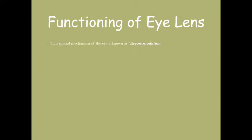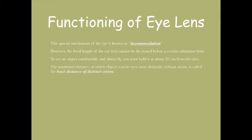However, the focal length of the eye lens cannot be decreased below a certain limit. To see an object comfortably and distinctly, you must hold it about 25 centimeters from the eye. The minimum distance at which objects can be seen most distinctly without strain is called the least distance of vision or the near point.